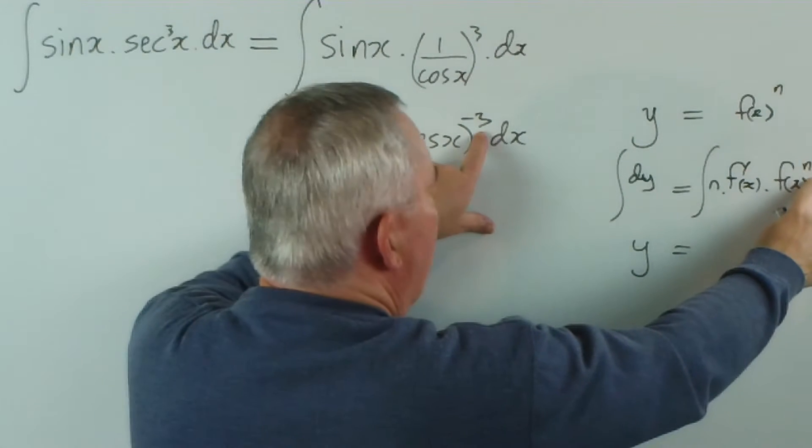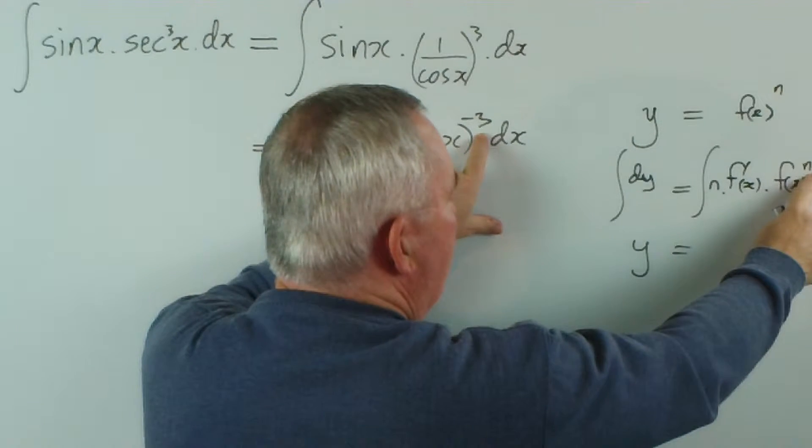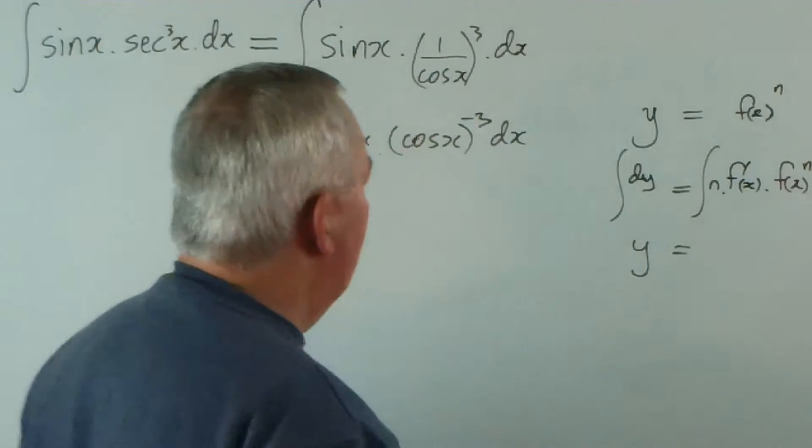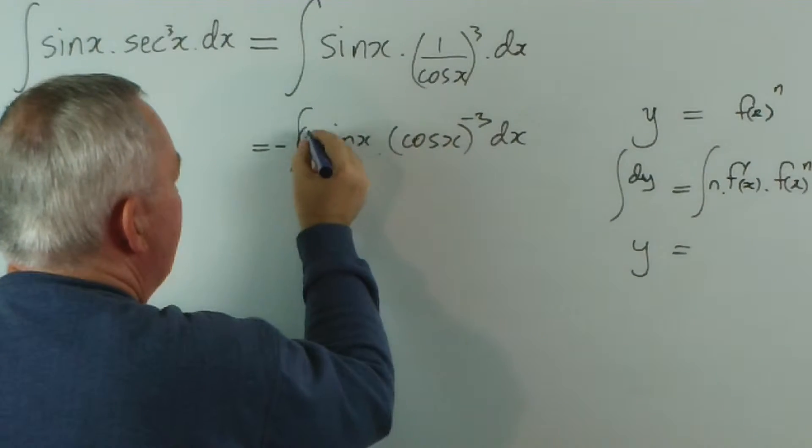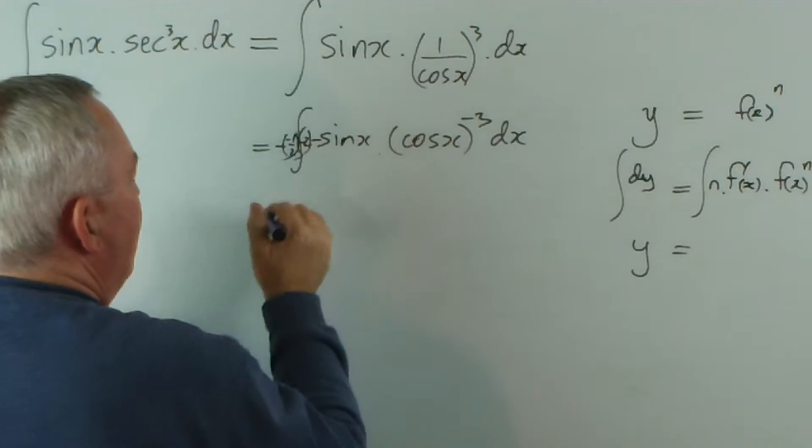And if my power here, if n-1 is worth negative 3, what is n worth? It's worth one more. Well, one more than negative 3 is negative 2. And I'd like to have a negative 2 here, so I compensate by putting a negative half out the front, because negative 2 times negative a half is 1.